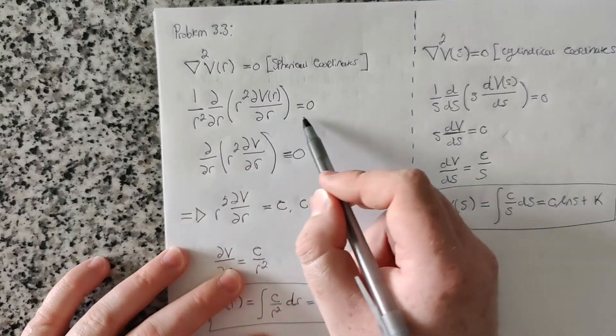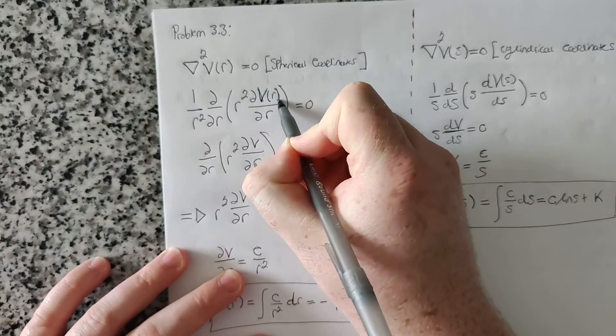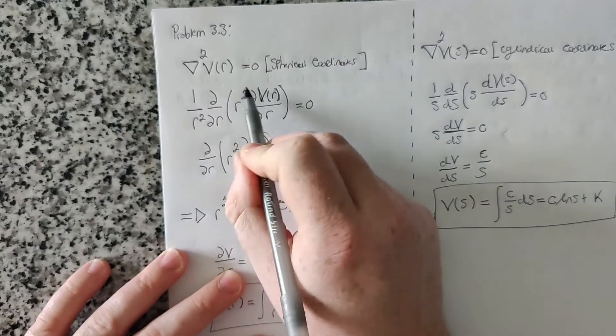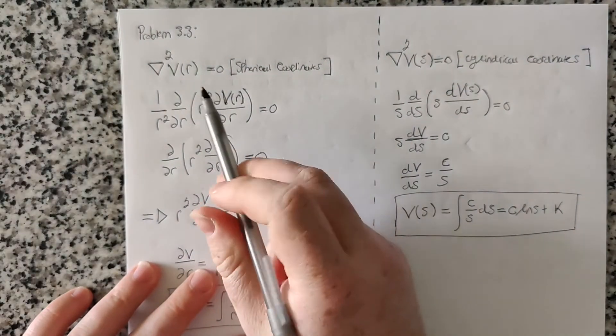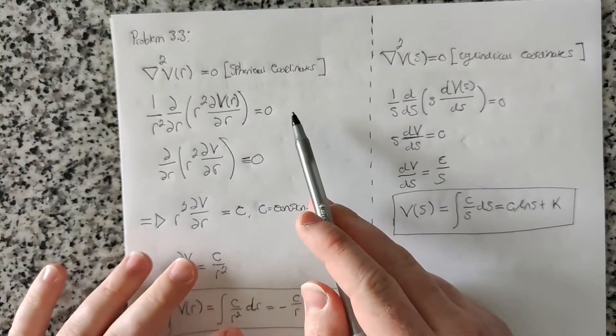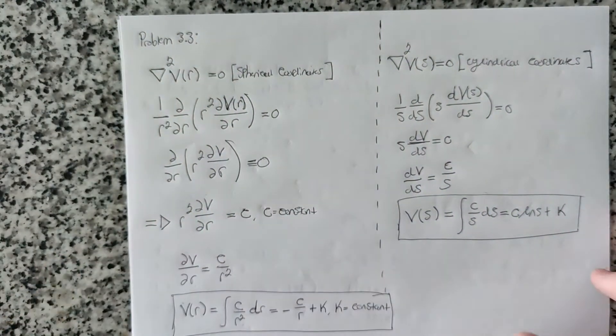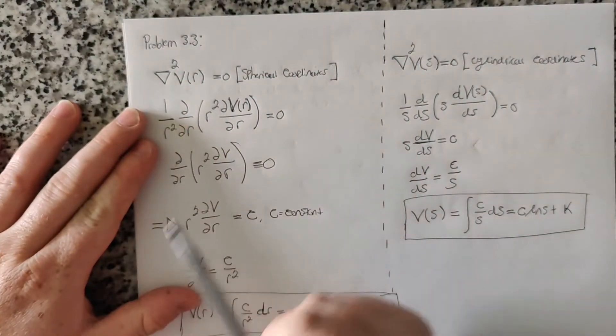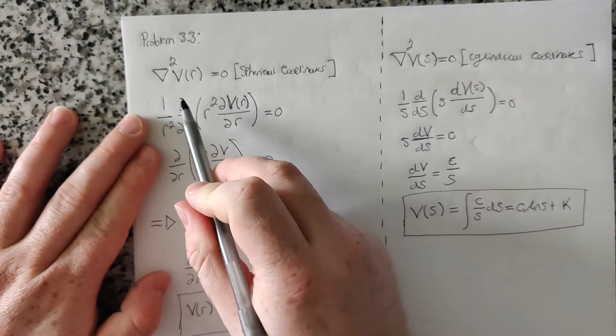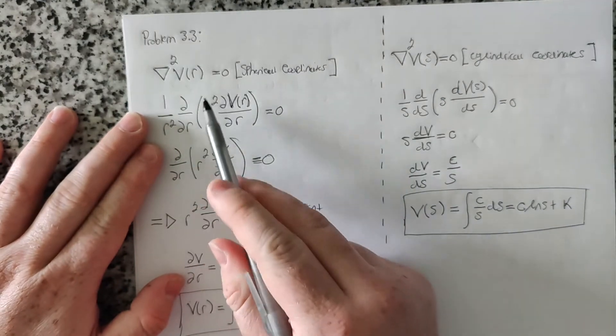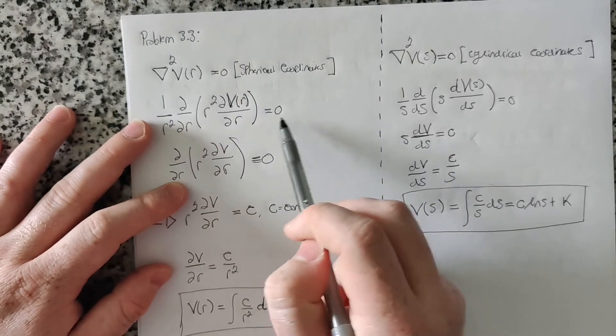Where I've only included the terms where we have the V, where the function is dependent on R. So where we're taking derivatives of our function that makes sense. Because there are some phi terms and some theta terms. However, if our function doesn't depend on phi or theta, those terms are zero. So I've only left the terms in the Laplacian that apply to our case. So we have one over R squared, a derivative with respect to R of R squared times the derivative of the potential with respect to R equal to zero.